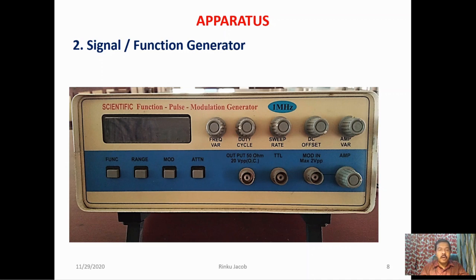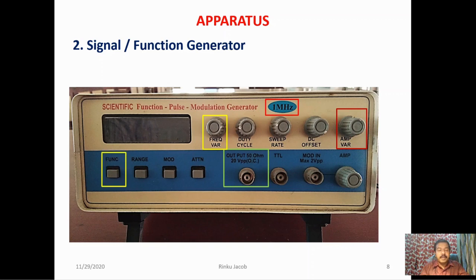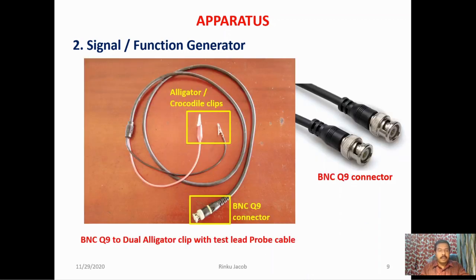The signal produced can be obtained from the output port using the BNC connector cable. The output has 50 ohm impedance and the maximum output voltage is 20 VPP, which stands for peak to peak voltage. The maximum frequency this oscillator can generate is 1 MHz. Frequency is varied using the frequency variability knob, amplitude using the amplitude variability knob, and the type of signal is selected using the function button. For this experiment we select a sine wave. The output is taken using the BNC Q9 to dual alligator clip cable.